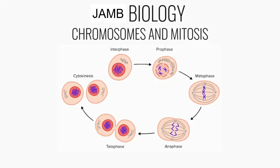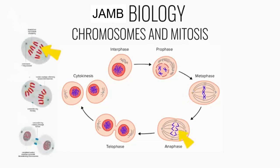This is followed by the disintegration of the nuclear envelope. The chromosomes then align in the equatorial plane. After this, the sister chromatids separate and move along the central spindle fiber towards the opposite poles.